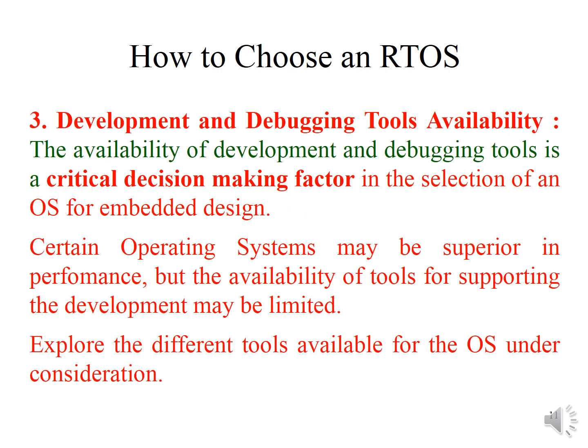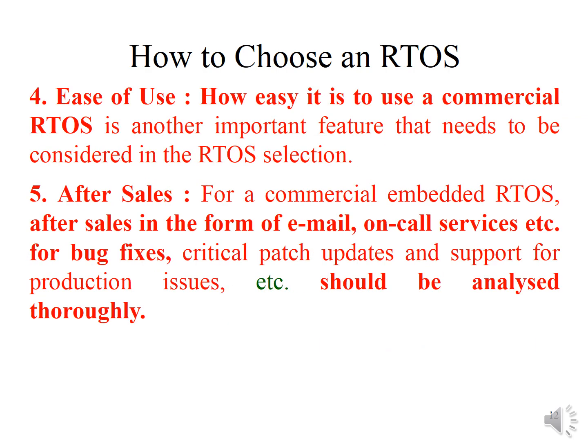The third non-functional requirement is development and debugging tools availability — this is a critical decision-making factor. Some operating systems are superior in performance but lack tools for development and debugging, so choose an OS for which such tools are available. The fourth non-functional requirement is ease of use: if buying a commercial RTOS, choose one that is easier to use.